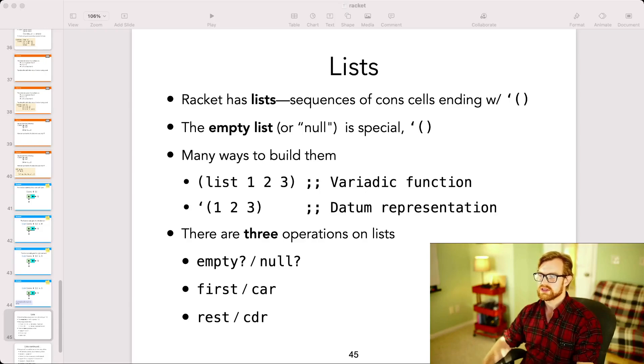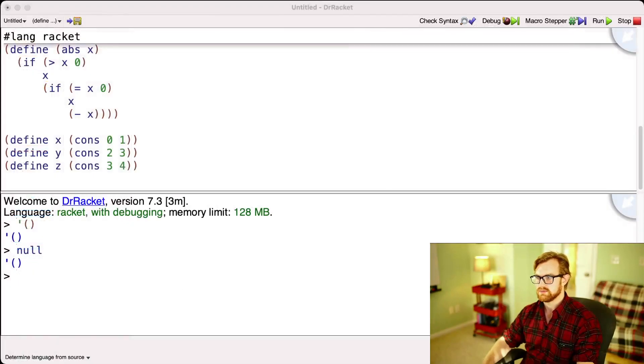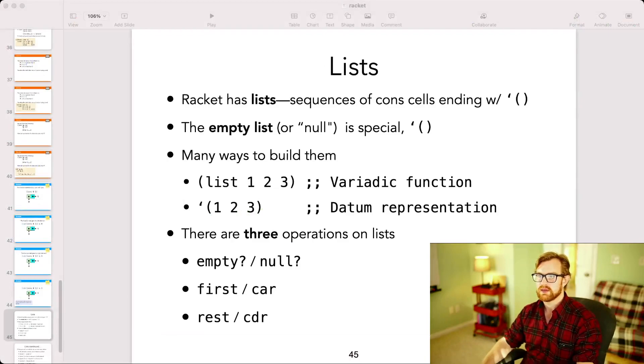The next one is that you can explicitly write the lists out using this tagged datum representation. So let's see an example of that. If I just type in list 1 2 3, what Racket spits out to me is tick and then list 1 2 3. This quoted data tells me that this is a list data in Racket. So this is what Racket represents lists as.